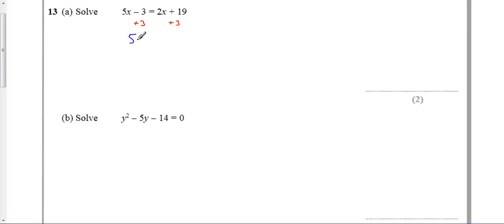So that gives me 5x. I'm going to do the inverse process, I'm going to add 3. So I'll get 2x stays the same, 19 and 3 makes 22. Same way I want to get the inverse of plus 2x, I'm going to take 2x. That gives me 3x is equal to 22.